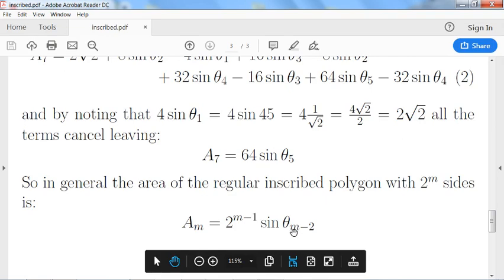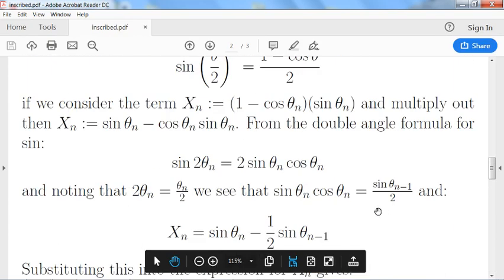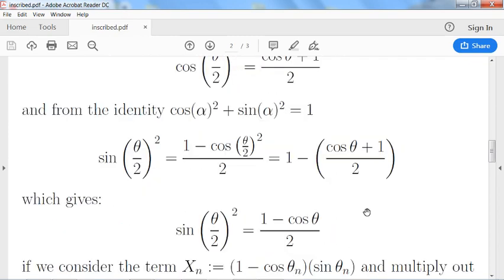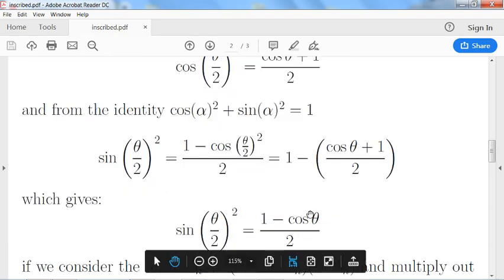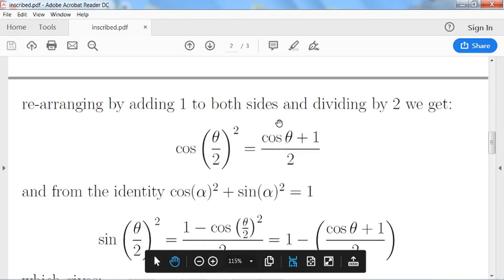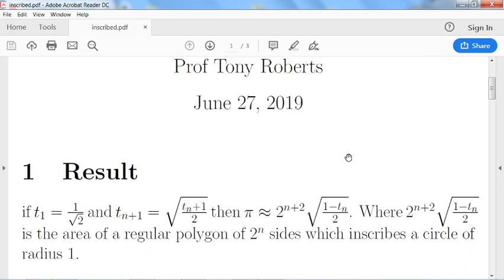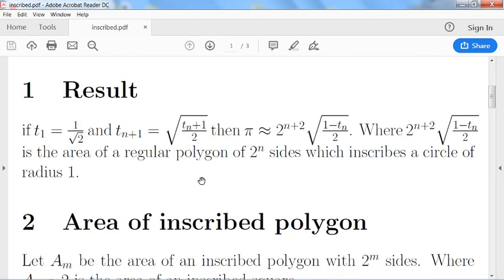And in general A_m is equal to 2 to the m minus 1 sine θ_m minus 2. So now if we substitute in t for cos θ and we look at these two formulas, cos squared θ here and sine squared θ here, when we substitute in let t equal t_1 equals cos θ_1, then we can see that t_2 in this formula would be the square root of t_1 plus 1 over 2. And t_1, because cos of 45 is 1 over √2, t_1 is this.